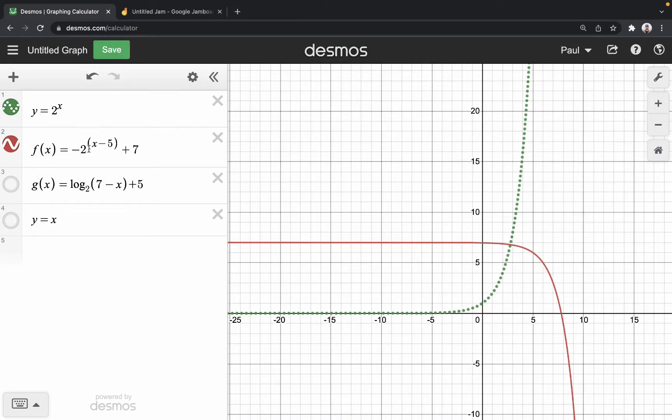So the first thing I'm looking at is this exponential function, f of x. It's 2 to the power of x minus 5, negated, and increased by 7. Now I read it in that order, because that's really the order that things are being done to x, the input.